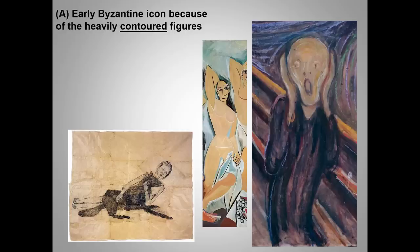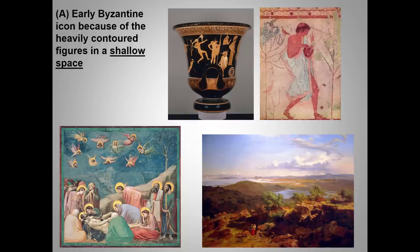Contoured means there is a defined boundary edge. Here are a few works that have a defined contour — note that on screen, some of the contour is a rather incongruous pale blue. The two works on top depict shallow space; we don't have much sense of background depth or perspective. Giotto on the bottom left shows the beginning of a movement toward deeper space. Roman painting also captured deeper perspective — this is not merely a modern phenomenon.